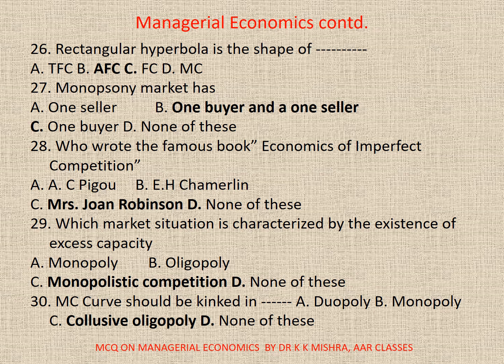30. The MC curve should be kinked in: A. Duopoly, B. Monopoly, C. Collusive Oligopoly, D. None. Correct option is C. Collusive Oligopoly.